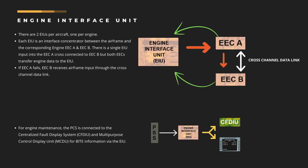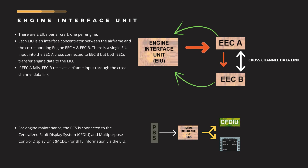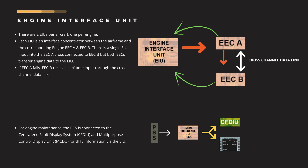If EEC-A fails, EEC-B receives airframe input through the cross-channel data link. The EIU concentrates data from or to the cockpit panels and displays. It also provides flaps and slats lever position, and gives logic and information to or from various other aircraft systems. For engine maintenance, the PCS is connected to the centralized FOB display system and multipurpose control display unit for data information via the EIU. The EIU is energized as soon as the aircraft electrical network is energized.